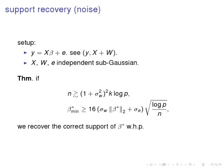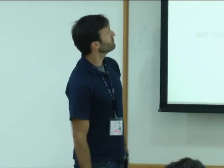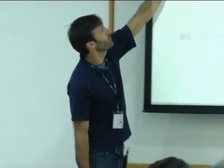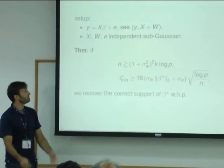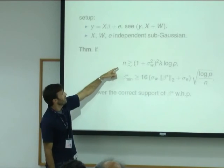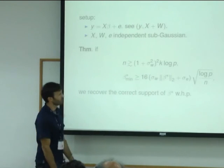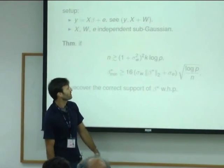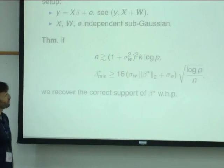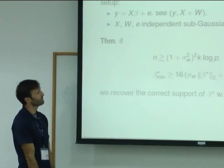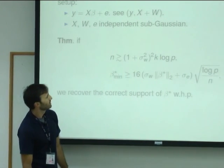So here are the specific results so you can see the numbers. And the basic result says, again everything inside is sub-Gaussian and zero mean. So if N is bigger than one plus the variance of W squared times K log P, and you have this guarantee on the lowest value of beta star, the lowest non-zero value, the magnitude, then you recover the support of beta star with high probability.